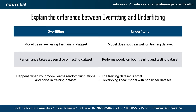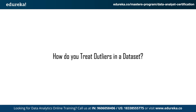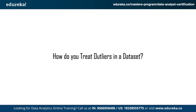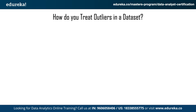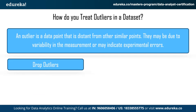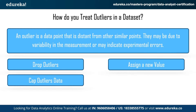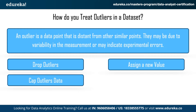The next question is: how do you treat outliers in a data set? An outlier is a data point that is distant from other similar points — this may occur due to variability in the measurement or may indicate experimental errors. To treat outliers, the first thing you can do is drop outliers by deleting all the records that contain them. The second method is capping outliers. The third method is assigning a new value — you can assign the mean, median, or some other appropriate value. The fourth option is to try a new transformation.